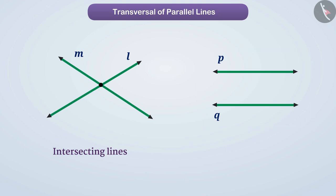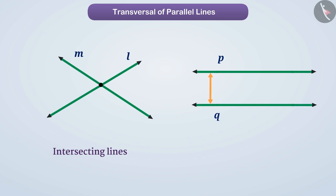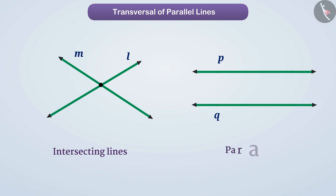In this pair, no matter how much line P and line Q are extended, they will never intersect each other. That is, the distance between these two will always remain the same. Lines that never intersect are called parallel lines.